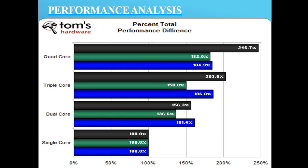As we can see in the diagram, there are four types of cores — single, dual, triple, and quad cores — which are examined across three types of action: games, applications, and synthetics.